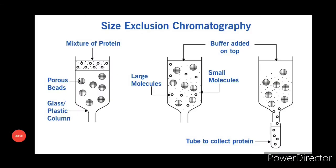Size exclusion chromatography: here, separation of solutes is based on the difference in their molecular weight or sizes. In size exclusion chromatography, which is also called gel filtration chromatography or molecular sieve chromatography, molecules are separated on the basis of their size and shape.